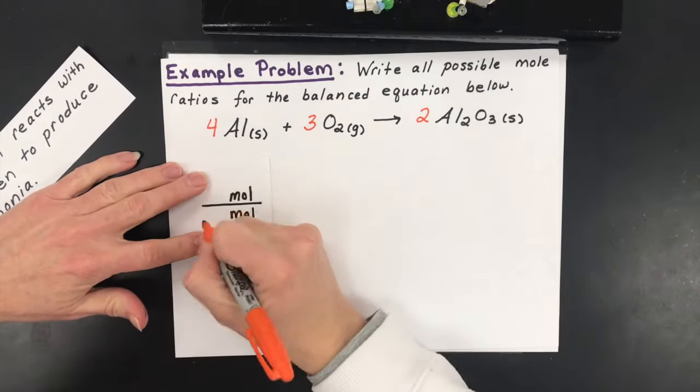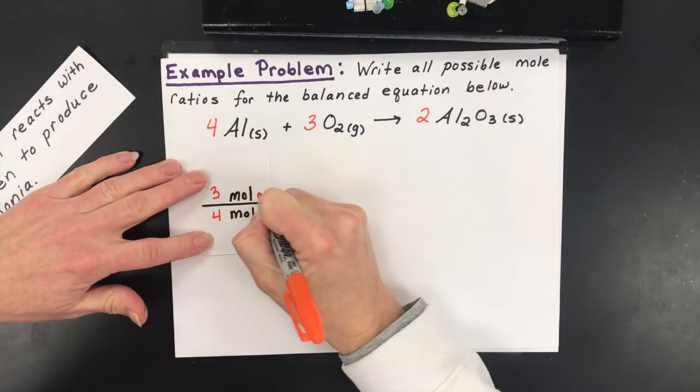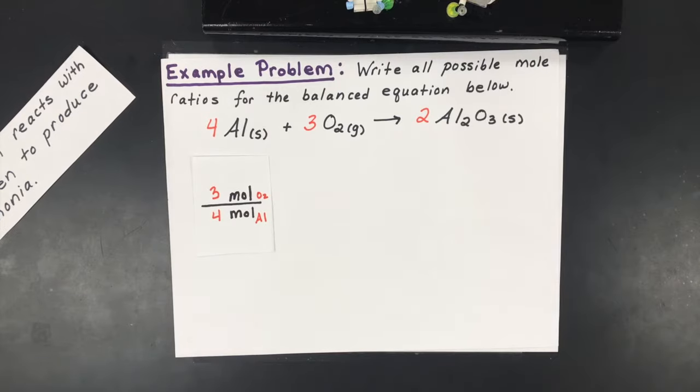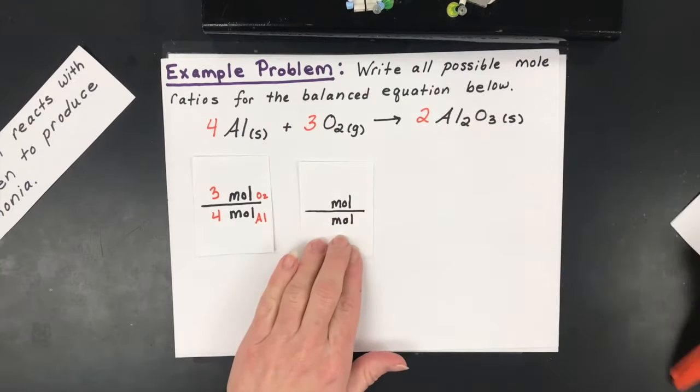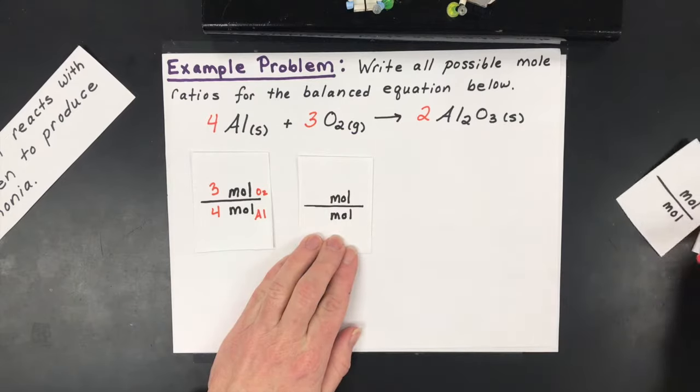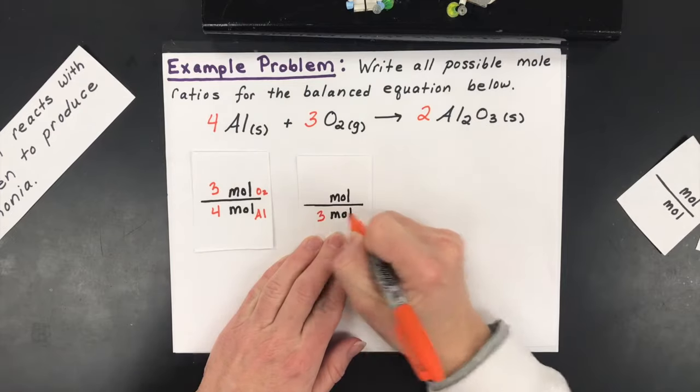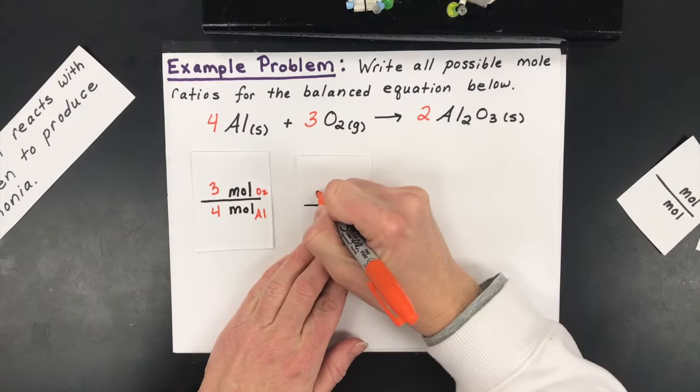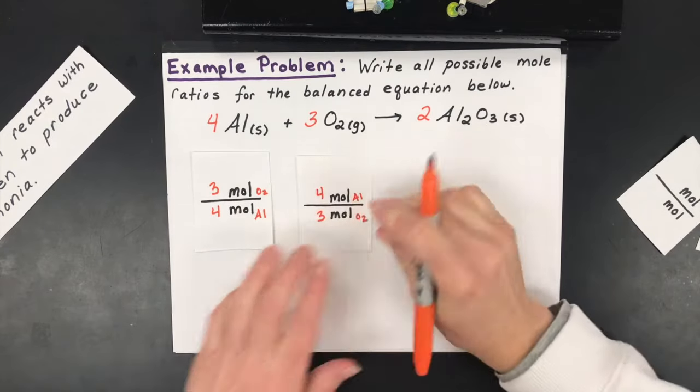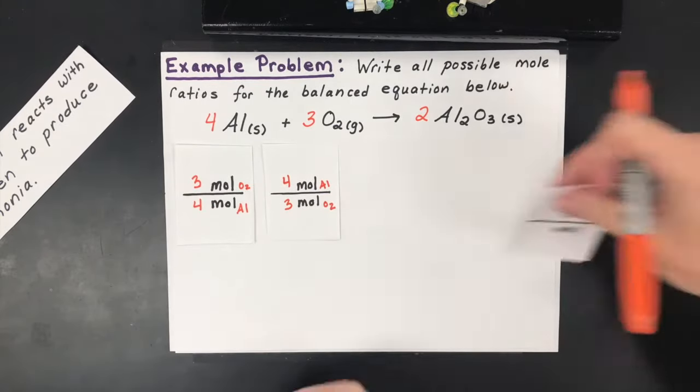So we'd say that for every four moles of aluminum I'm going to need three moles of oxygen. So there's one of my mole ratios. Another one would be the reciprocal: for every three moles of oxygen I would need four moles of aluminum. So those are technically two separate mole ratios but really they're very similar to each other.